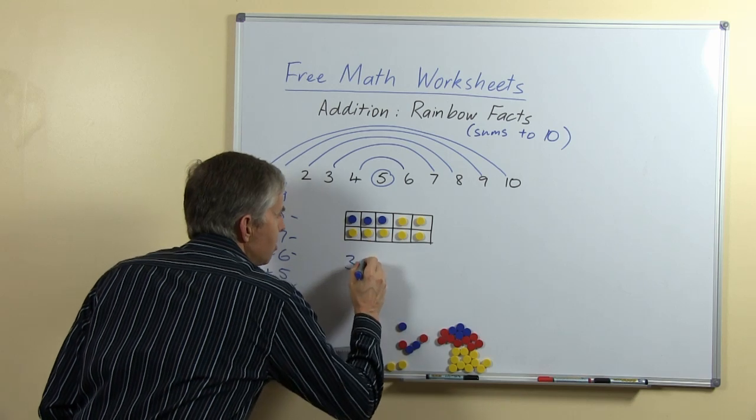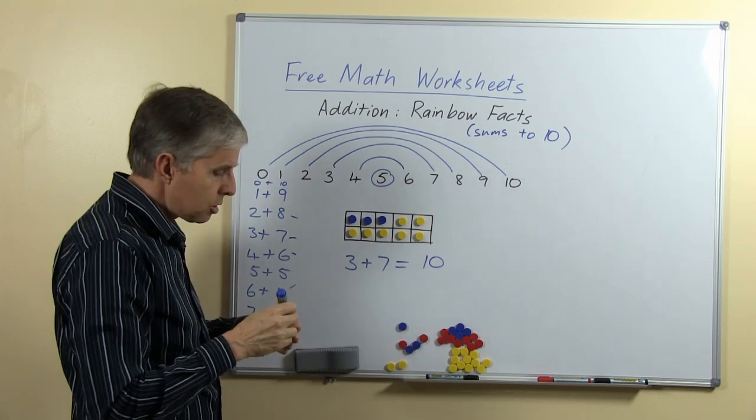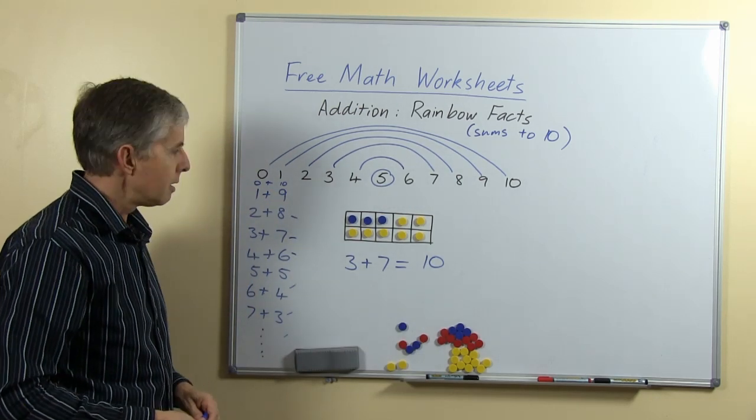So here a child could say well I've got 3 blue ones and 7 yellow ones and that makes 10. And so students could do a whole set of those and that would help them to learn these number facts again.